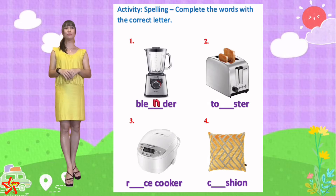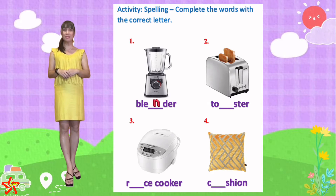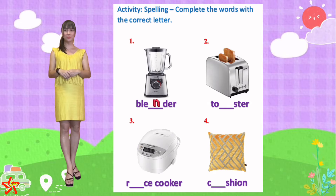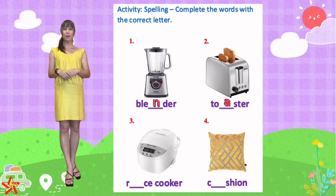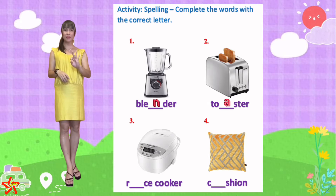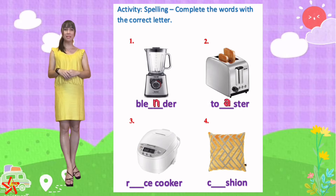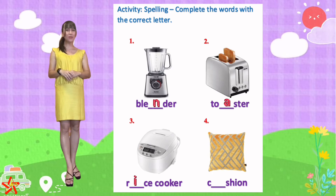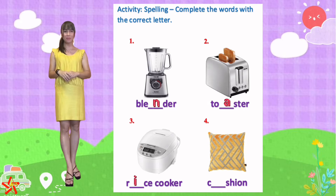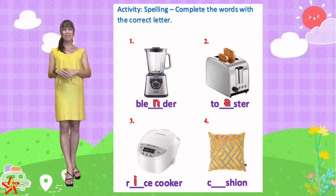Number two, what is the missing letter? It's A — T-O-A-S-T-E-R. Number three, what is the missing letter? It's I. R-I-C-E, and then cooker, C-O-O-K-E-R.